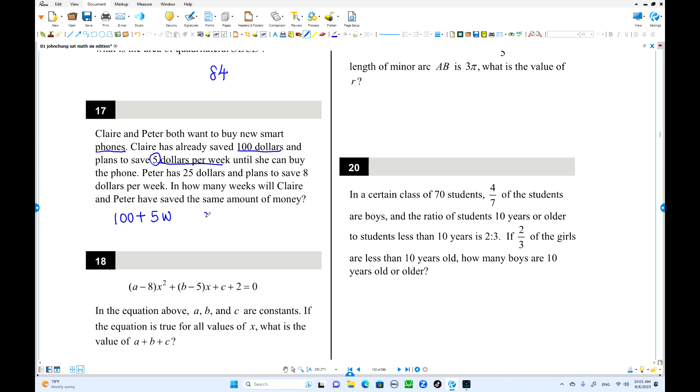Peter has $25 already, so he's going to save $8 per week, 8 times W. But how many weeks are they equal, same amount? Minus 5W over here. 3W minus 25 equals 75. So W equals 25. In 25 weeks, they have the same amount.